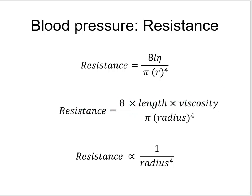Under normal physiological circumstances, we do not manipulate blood vessel length to increase resistance and blood pressure — you don't start growing new blood vessels just because you want blood pressure to go up. That's not something that happens. Does viscosity of blood ever meaningfully change? For the most part, no. However, in severe dehydration, blood viscosity can increase to a meaningful degree.